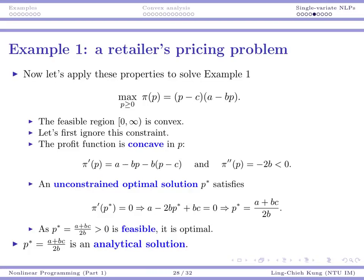P* = (A + BC) / (2B) is the analytical solution to this problem. Given any specific numbers, you could put this convex program into a solver and get a number — but that's not what we want here. What we want is this analytical expression: given A, B, and C, we know exactly what the optimal price P* is. With an analytical solution, we can learn more about the problem. We'll explore that in the next video.